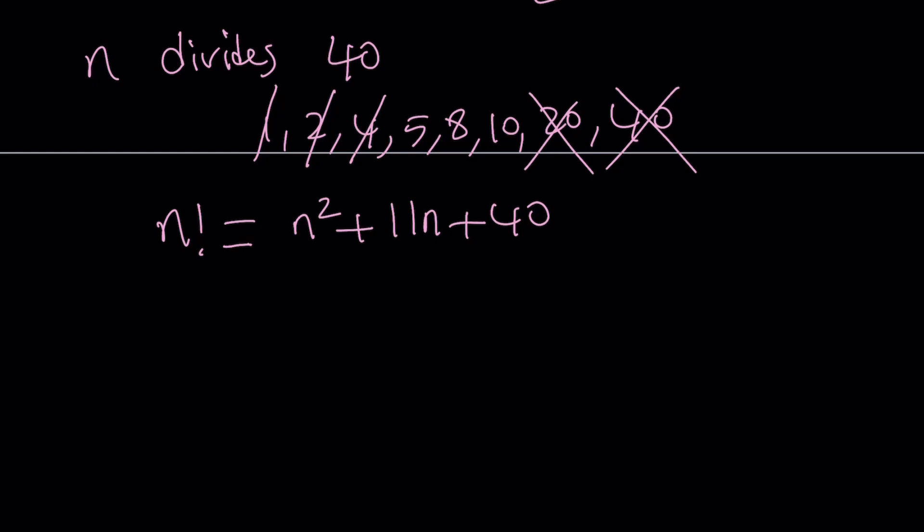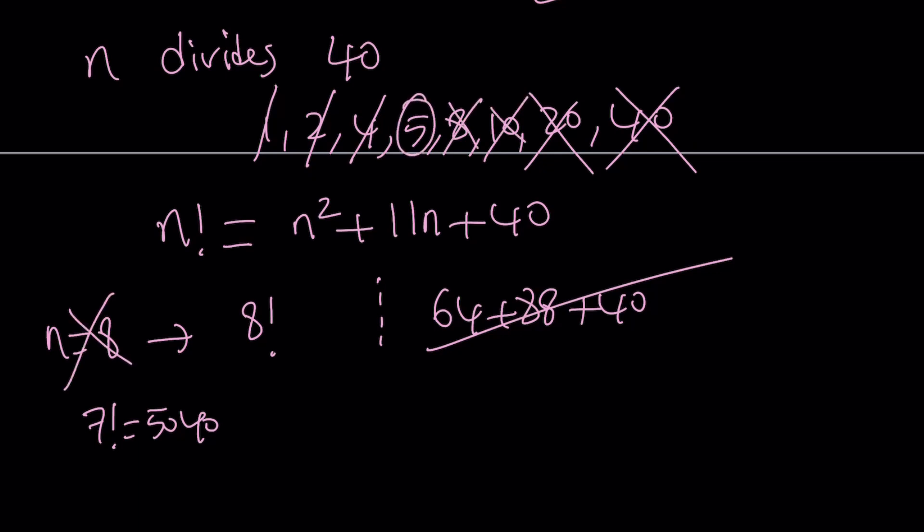And obviously, 10 factorial is also going to be very large, even 8 factorial. So that's probably 5 factorial. Let's just test it out. We only have a few values. Let's start with 8. If n is equal to 8, we get 8 factorial on one side. And on the other side, we get 64 plus 88 plus 40. And think about it. 7 factorial is 5,040. When you multiply that by 8, you're going to get something like 40,000. And obviously, this number is going to be much, much smaller. So n equals 8 is not going to work either. 10 is going to be way too large. So we're left with 5.